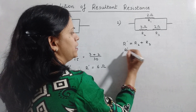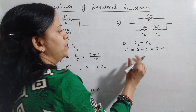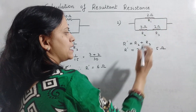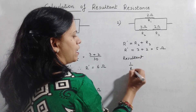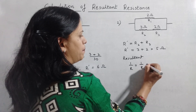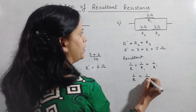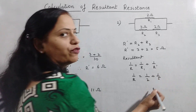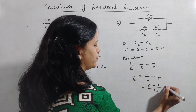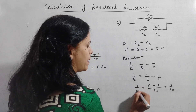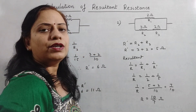Using the formula for series combination, R' sums up to be 3 plus 2, that is 5 ohms. Now, we will find the resultant of R1 and R' in parallel: 1 upon R is equal to 1 upon R1 plus 1 upon R'. This gives 1 upon 2 plus 1 upon 5. The LCM of 2 and 5 is 10, so we get 5 plus 2 equals 7 by 10. Therefore R will be 10 upon 7 ohms.